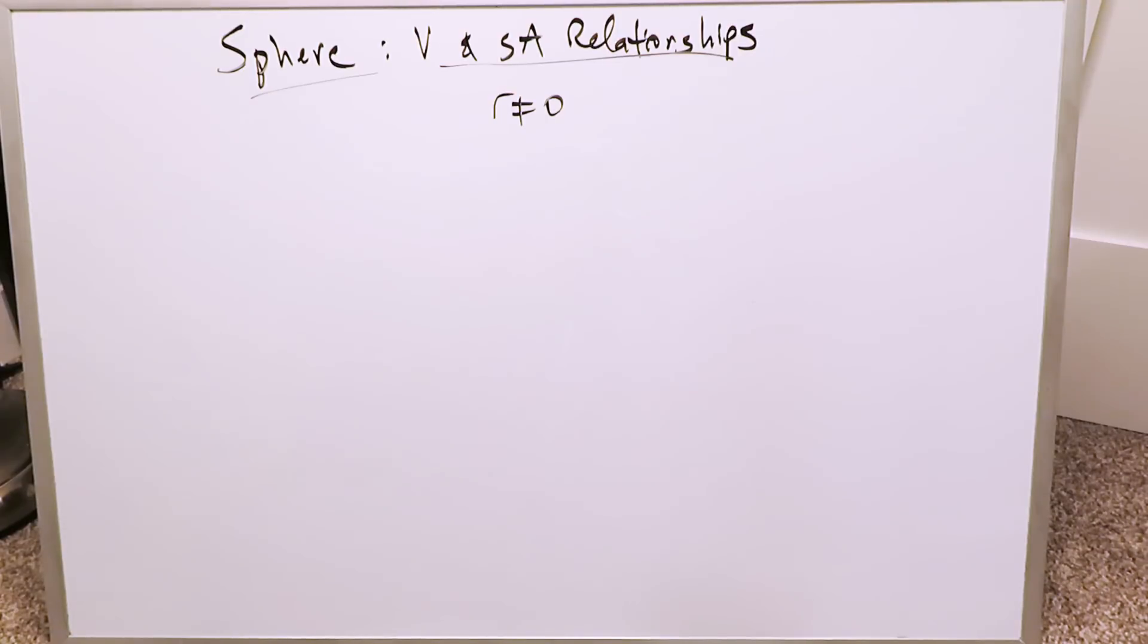When you're looking at the sphere, there are some interesting volume and surface area relationships you can determine. What are those values of radius for which the volume will always be larger for the sphere? What are the values of radius for which the surface area will be larger? What is that value for the radius for which the volume and the surface area will be equal? That's what we are looking at.